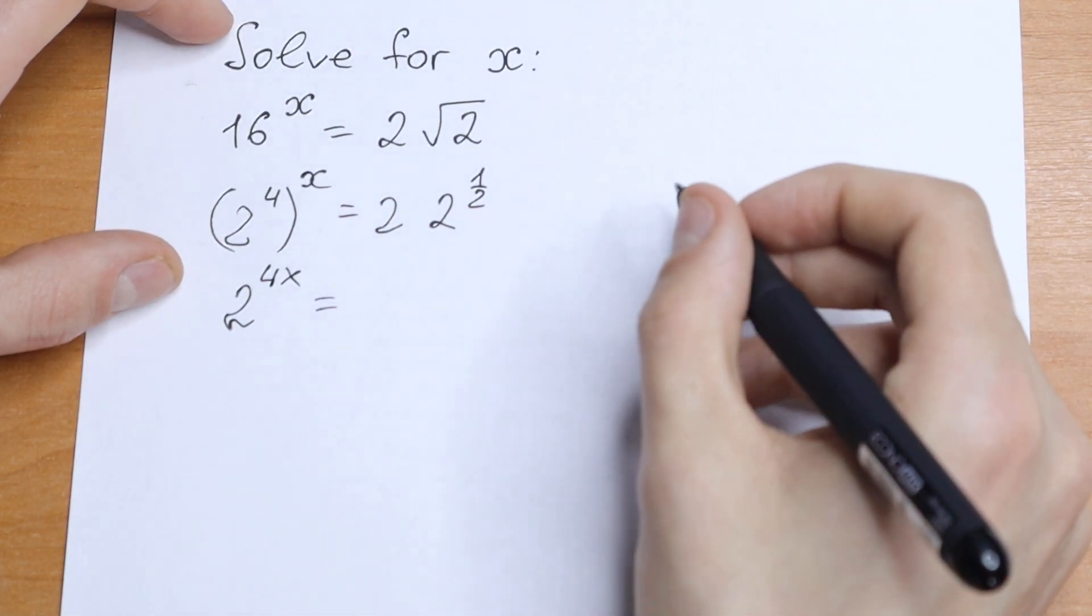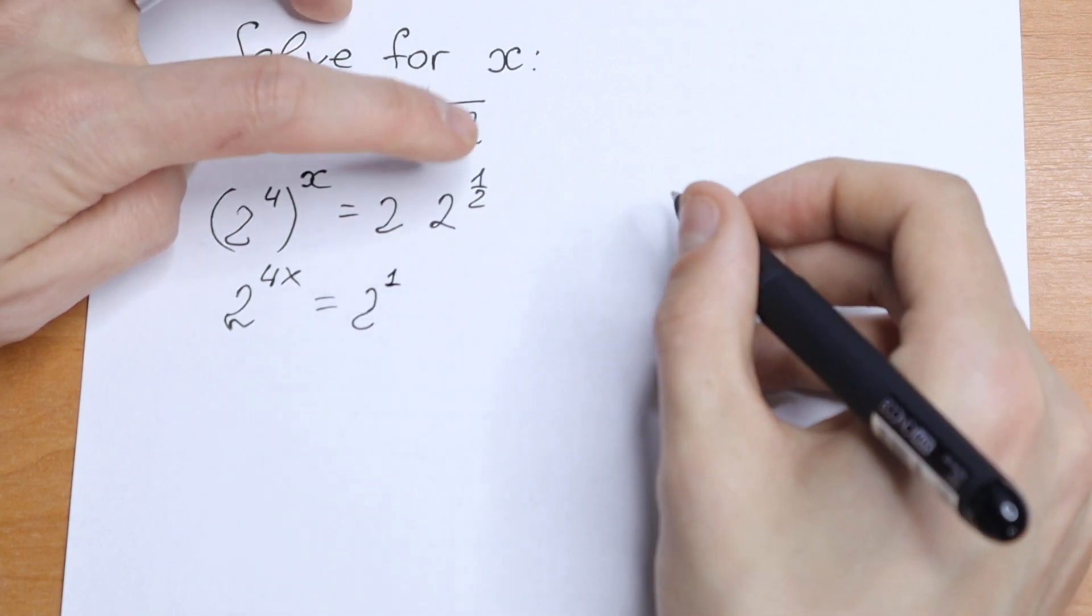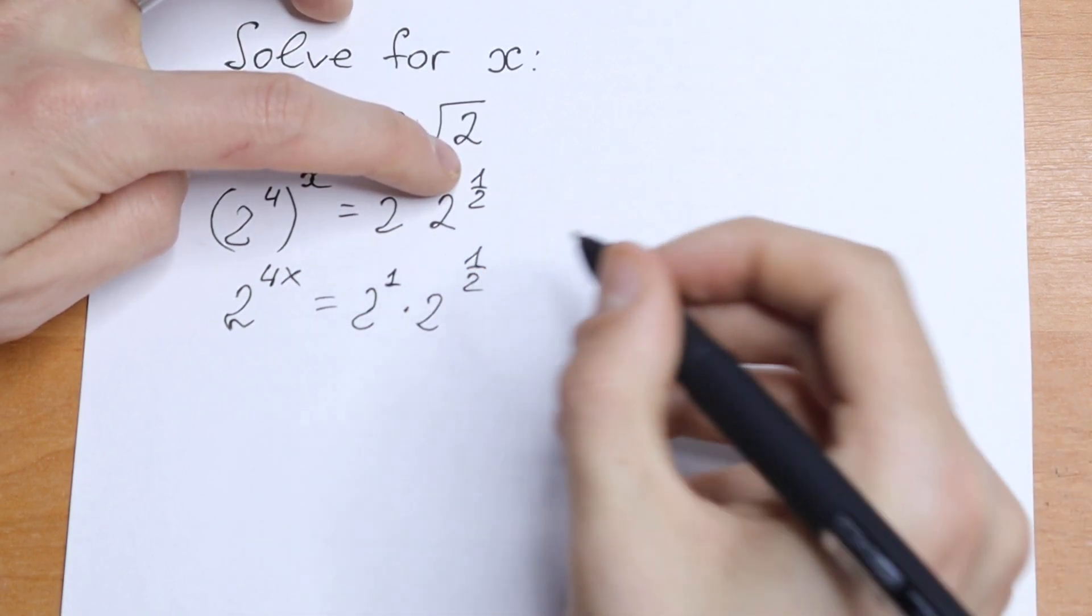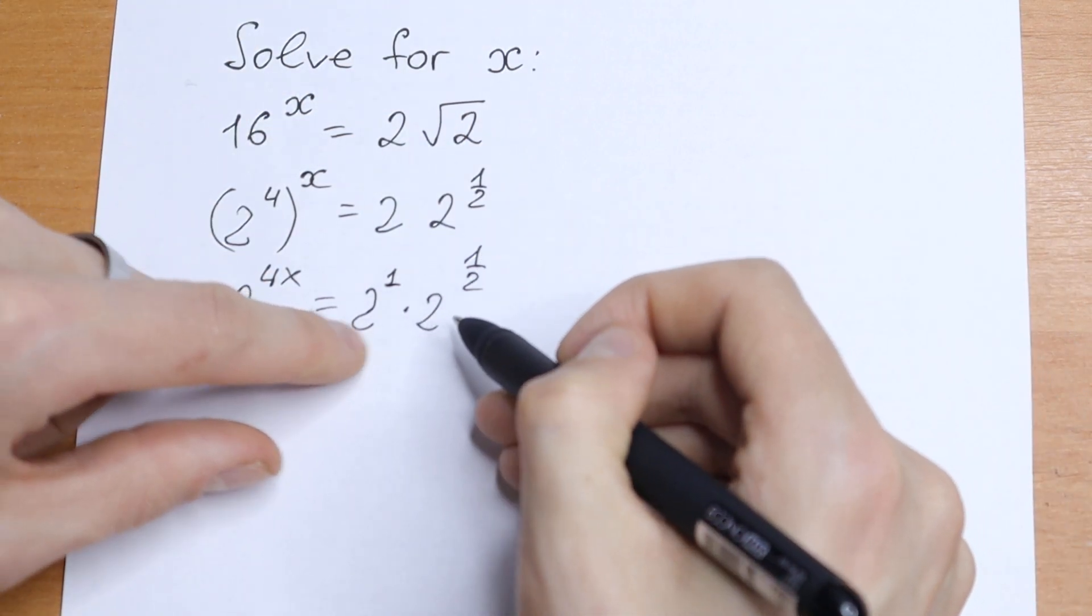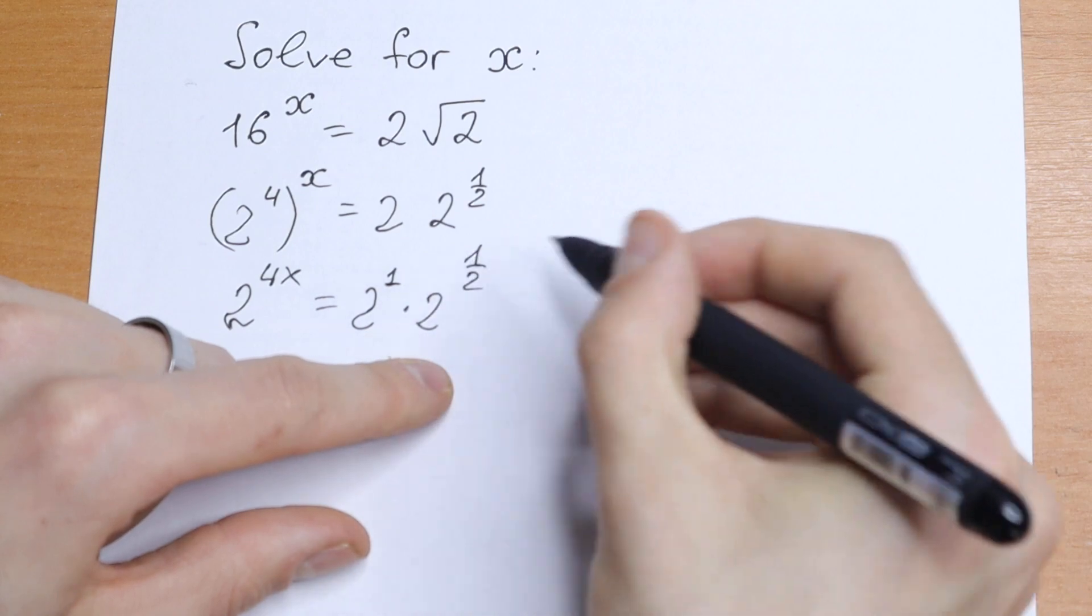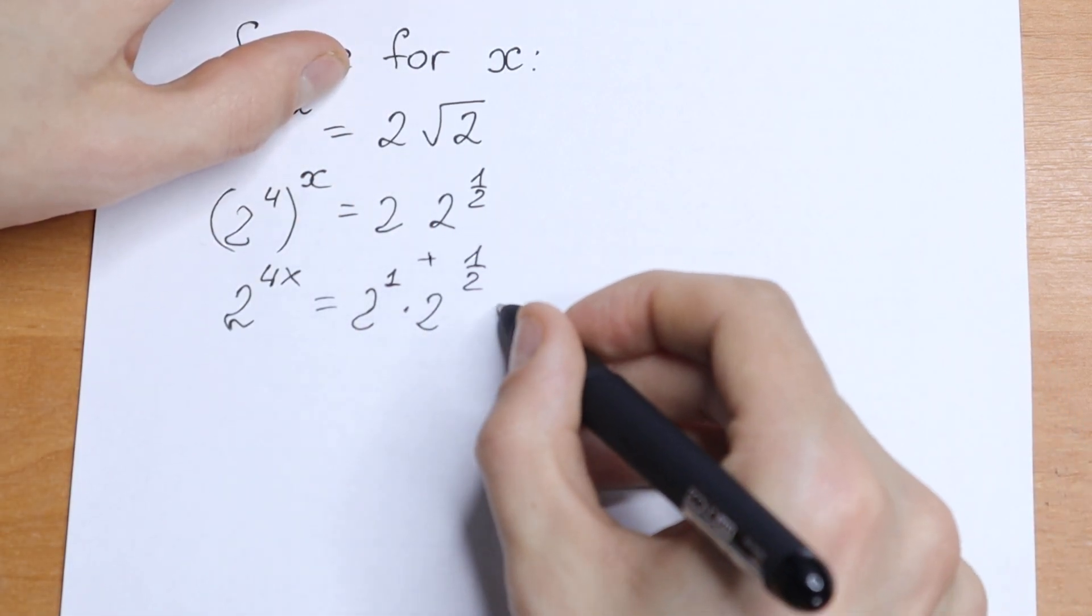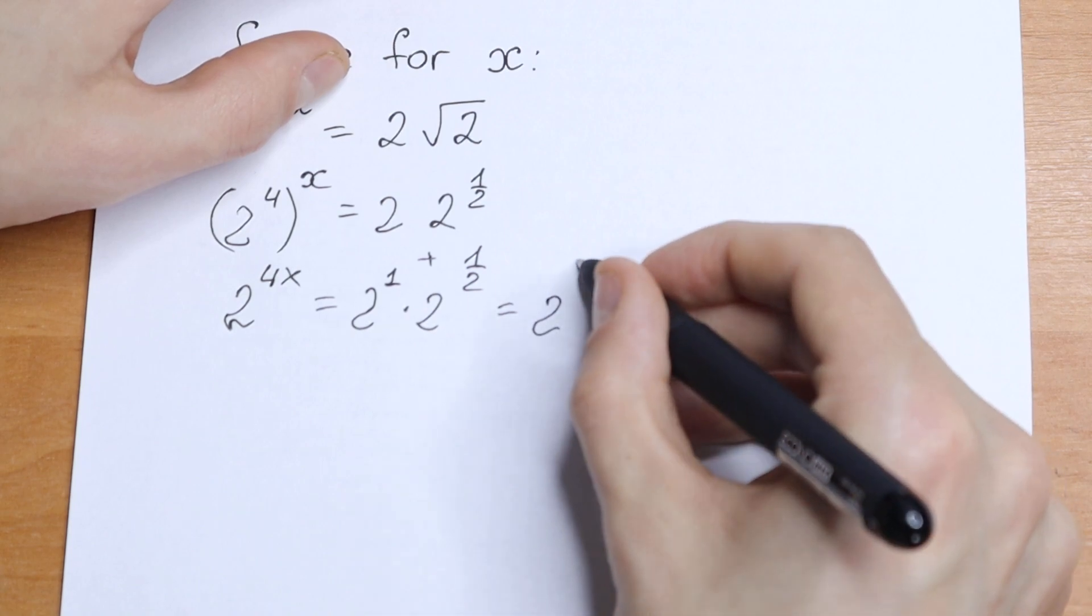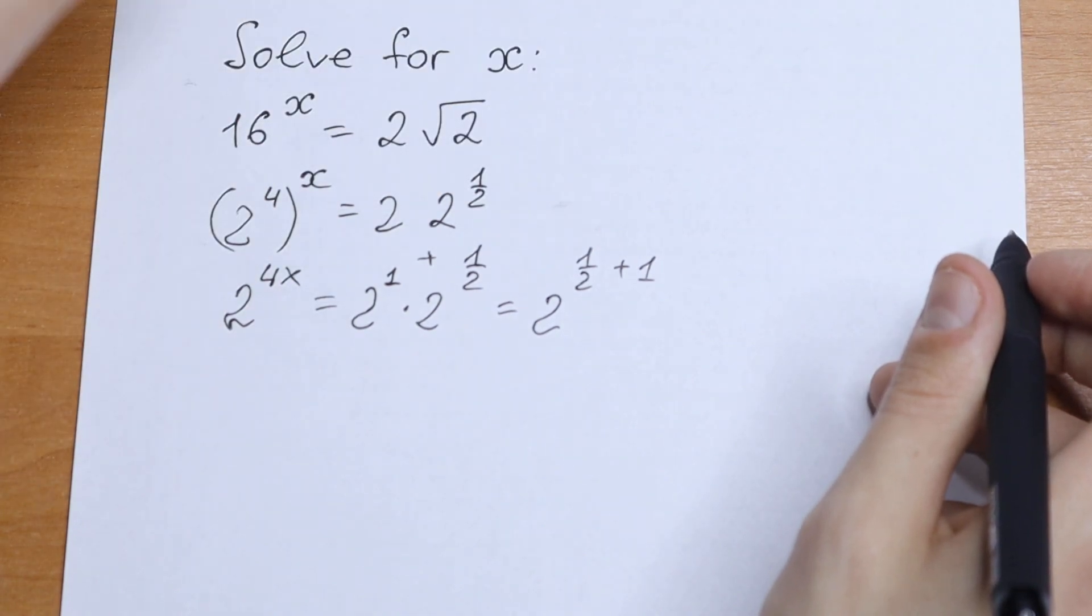And what we will have on the right, take a look. This is 2 to the first power and 2 to the power 1 half. We need to know the rule. If we have a to the power x times a to the power b, we can write it as a to the power x plus b. So we need to add these powers. So as a result we will have 2 to the power 1 half plus 1, or 1 plus 1 half.